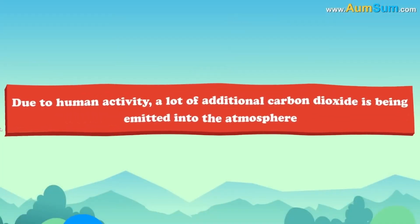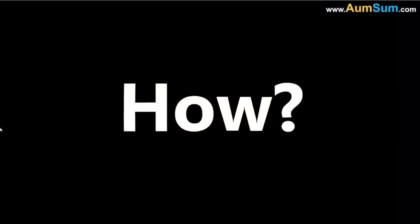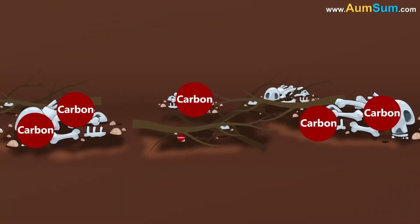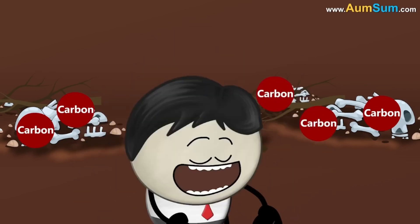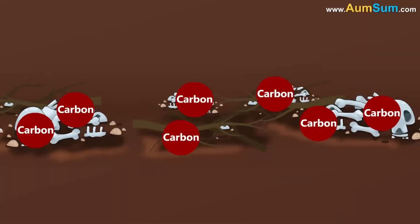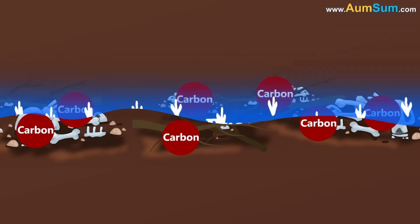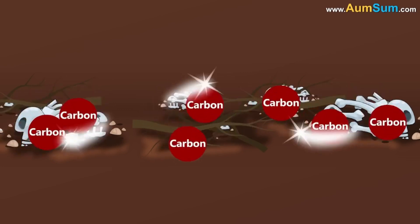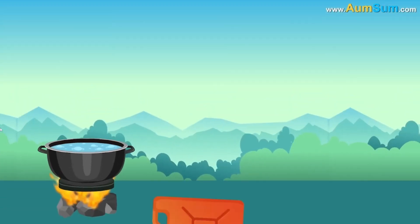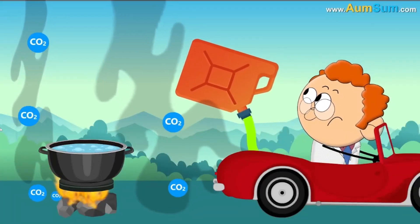Besides this, due to human activity, a lot of additional carbon dioxide is being emitted into the atmosphere. Millions of years ago, many plant and animal remains containing carbon got buried deep into the soil. Within the earth, these remains were subjected to extreme temperature and pressure for millions of years. Eventually, they got converted into fossil fuels such as coal, natural gas, oil, etc. Now, for most of our activities like cooking and driving, we use these fossil fuels, releasing the stored carbon back into the atmosphere.